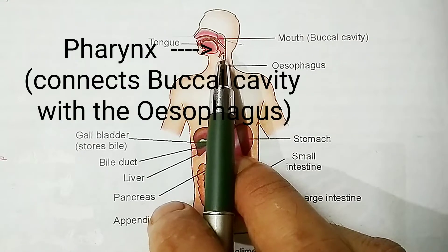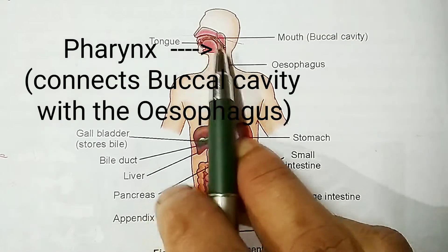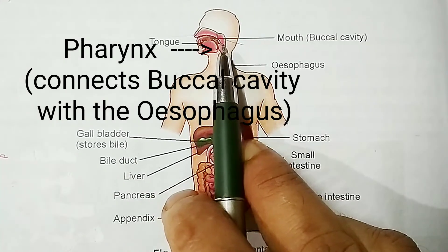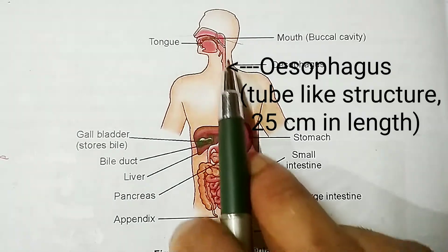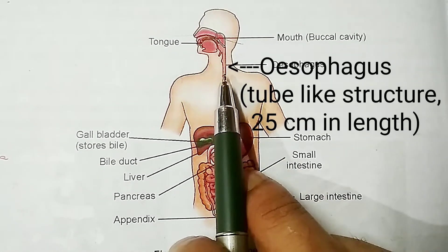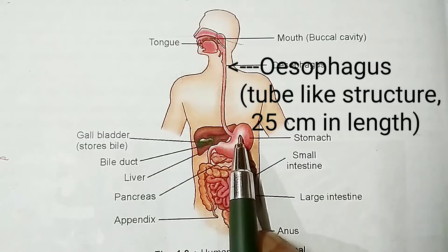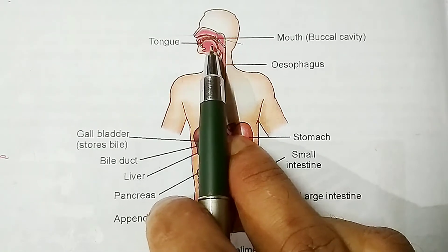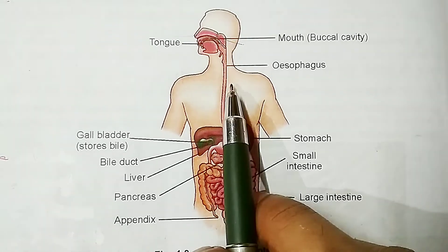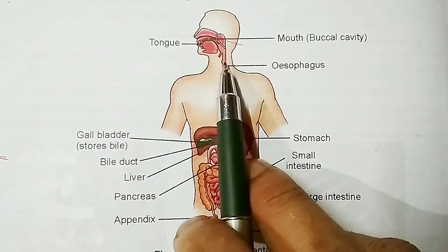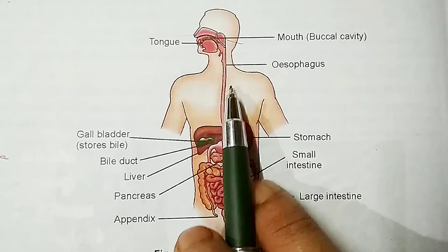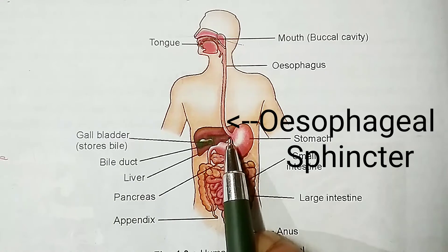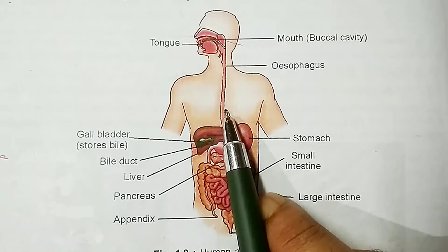The next part is the pharynx. The pharynx connects the buccal cavity with the esophagus. The esophagus is a tube-like structure around 25 cm in length, extending from the pharynx to the stomach. Food passes through the esophagus by peristalsis — the rhythmic contraction and relaxation of the muscles of the esophagus — by which food moves from mouth to stomach. The esophageal sphincter muscle prevents the ejection of stomach contents back into the esophagus.